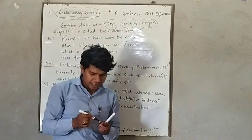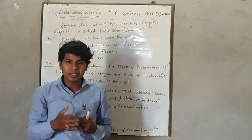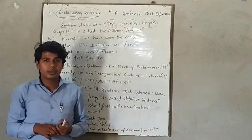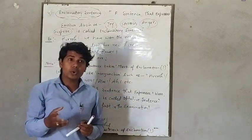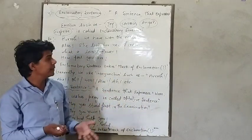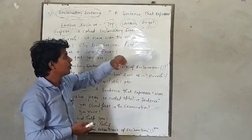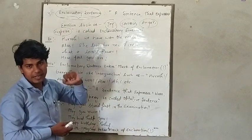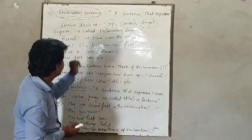I mean to say the sudden feelings that we feel in our heart, to express those feelings we use exclamatory sentence. And those feelings can be joy, sorrow, anger and surprise. Is that clear? Let's see some examples.